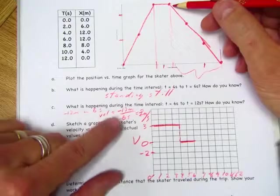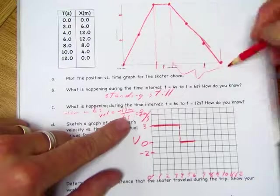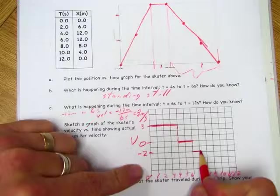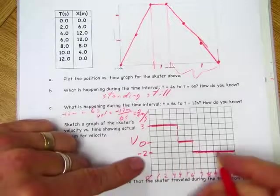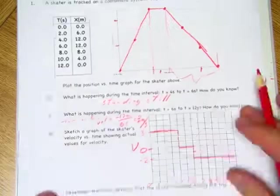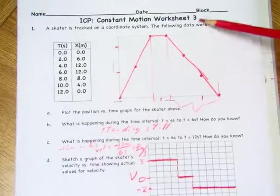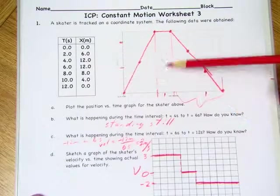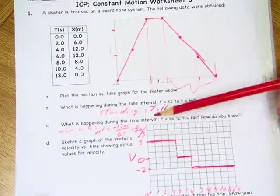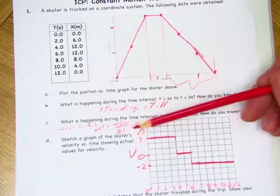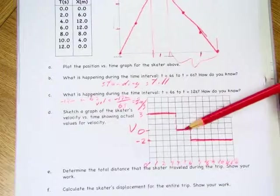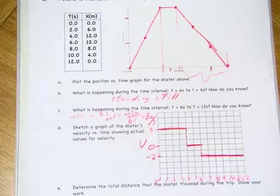And then we already figured that it was going negative 2 meters per second between 6 and 12. So for 6 seconds, it was going negative 2 meters per second. So remember, you've got to make all these things tell the same story. The data in the data table tells us this position versus time graph. We can figure out its velocity at different times. We can do velocity and put it into a graph. But they all say the same thing.